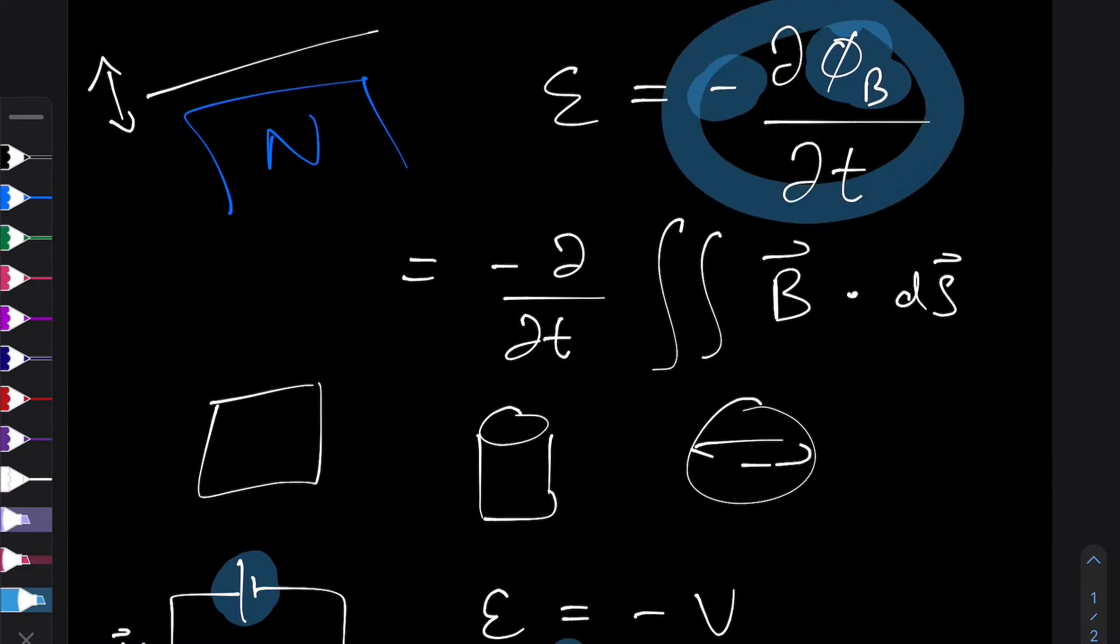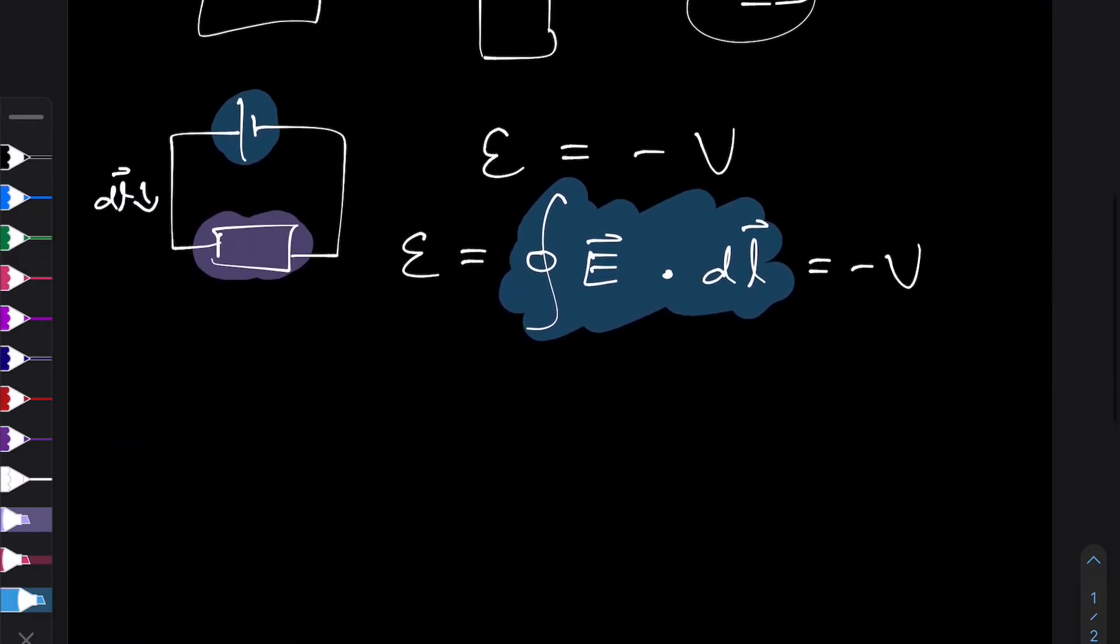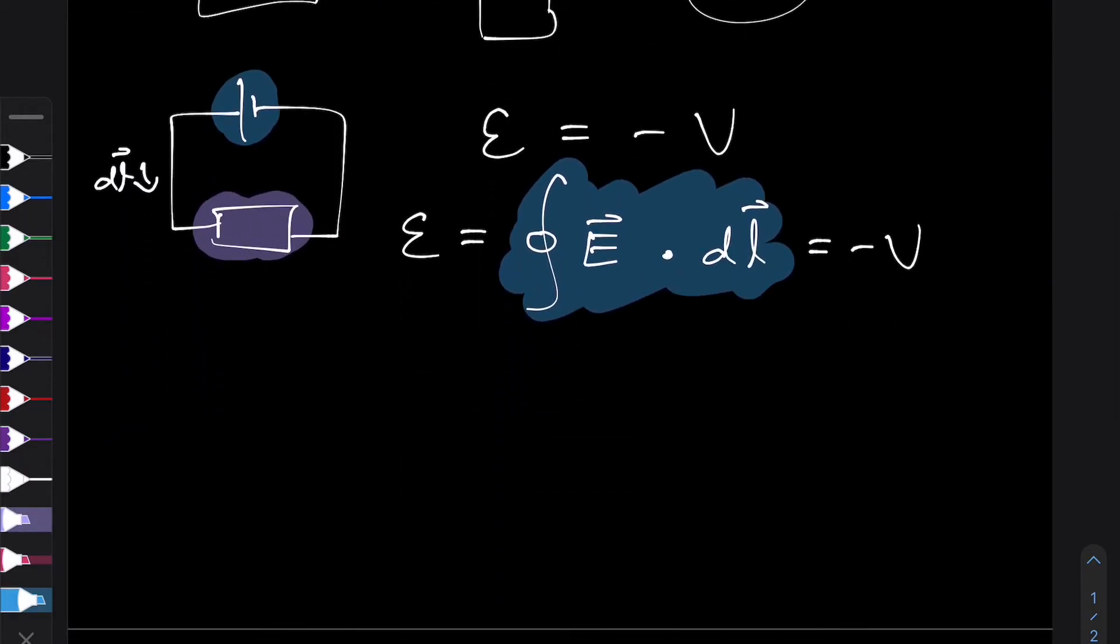So let's equate them together. So by equating them, we see that the loop integral of E dotted with DL is equal to the negative rate of change of this double integral of B dotted with dS.